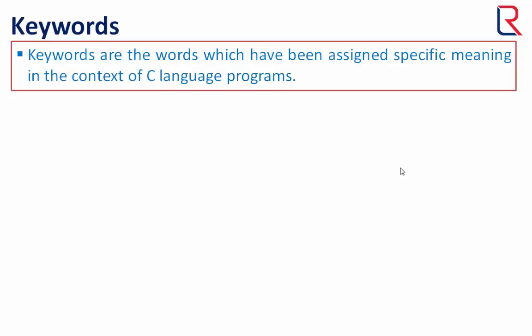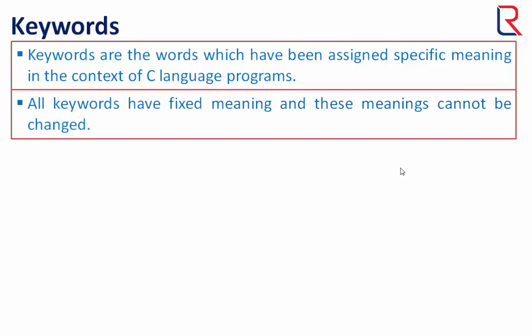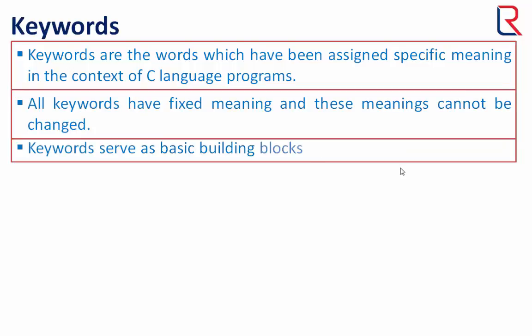Keywords are the words which have been assigned specific meaning in the context of C language programs. All keywords have fixed meaning and these meanings cannot be changed. Keywords serve as basic building blocks for program statements.